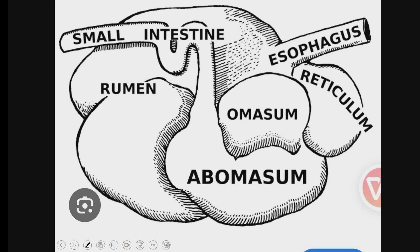Here is a larger picture of the stomachs only — the rumen, the reticulum, the omasum, and the abomasum. The most important thing about these stomach chambers is that the last part, the abomasum, functions the same as in chickens because the type of digestion that takes place there is chemical — it takes place because of enzymes or gastric juices.